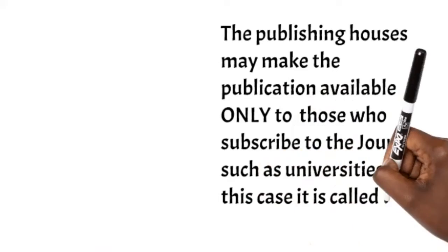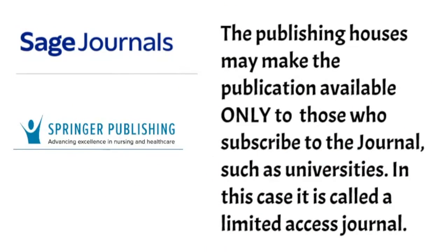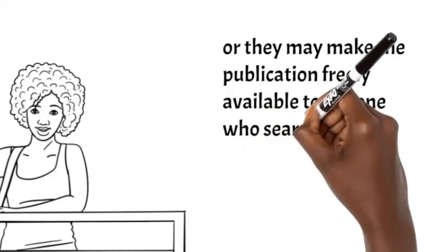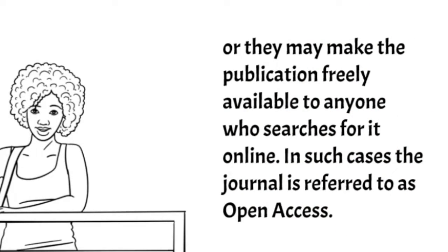The publishing houses may make the publication available only to those who subscribe to the journal — institutions like universities — and in this case they're called limited access journals. Alternatively, the publishing houses may make the publication freely available to anyone who searches for it online, and in such cases the journal is referred to as open access.